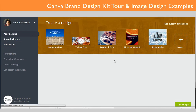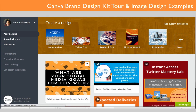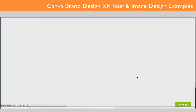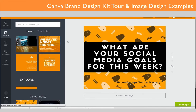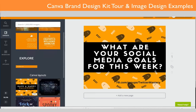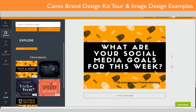Let's go to the designs and I'll pull one up quickly to show you. This is an image I did for my Facebook group. I selected the Facebook template so it's already the right size, then chose a Canva layout — the Happy Halloween one — and customized it for my needs. I put 'What are your social media goals for this week?' on it, and I always watermark it at the bottom with the Facebook group name: Twitter Mastery Lab.